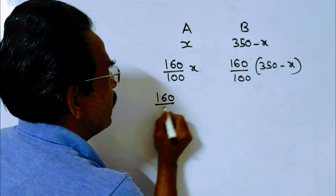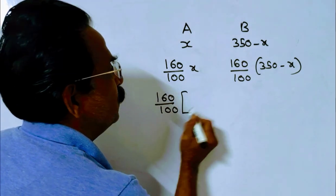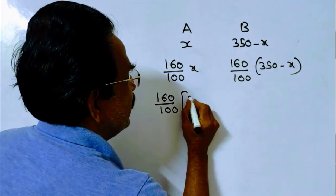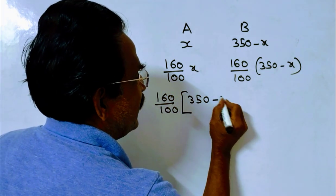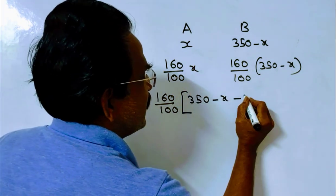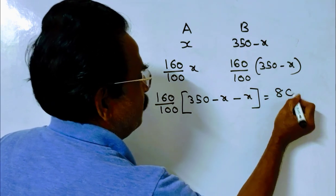So, 160 by 100 into this minus this. 350 minus X minus X is equal to Rs. 80.